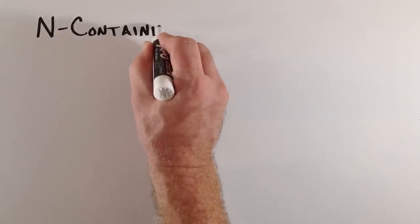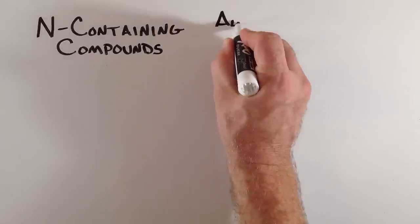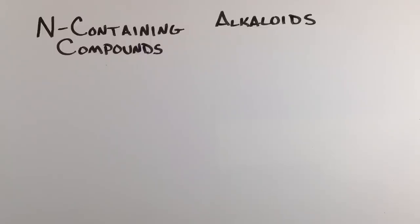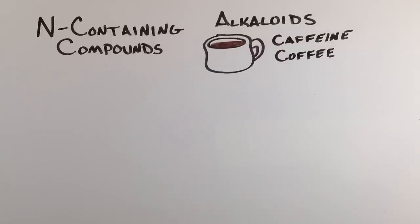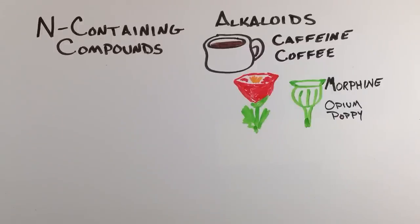First are the nitrogen containing compounds. There are several different types of chemicals in this group, such as the alkaloids, a particularly effective group that has a range of effects on the nervous system. Examples of alkaloids include caffeine in coffee, or morphine that comes from the opium poppy.